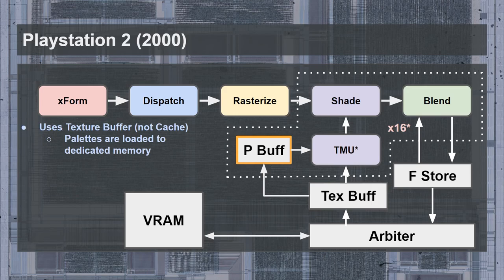To support the high number of indexed textures, a temporary color palette buffer is needed for each pipeline. There would be 16 of these, each having a capacity of 1 kilobyte — enough for 256 colors in 32-bit indexed mode. This is also what would have supported the high fill rate of sprites, similar to the original PlayStation's GPU.